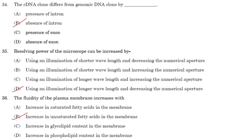The cDNA clone differs from a genomic DNA clone by the absence of introns. A cDNA clone contains only sequences found in mRNA, so there are no intronic sequences, whereas genomic DNA contains sequences of the entire genome. Answer is option B.